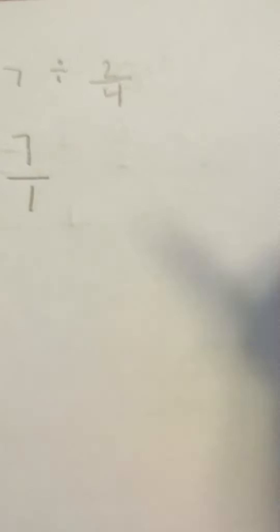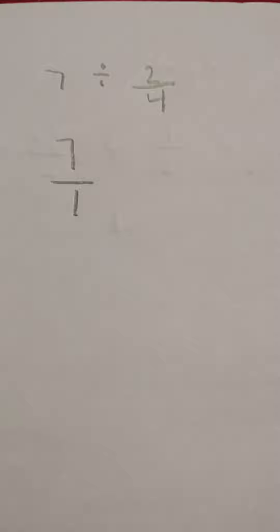Now we know that seven is understood, or a whole number is understood over one. So that's what we know first of all, and first and foremost. Now, so what do we do with this?